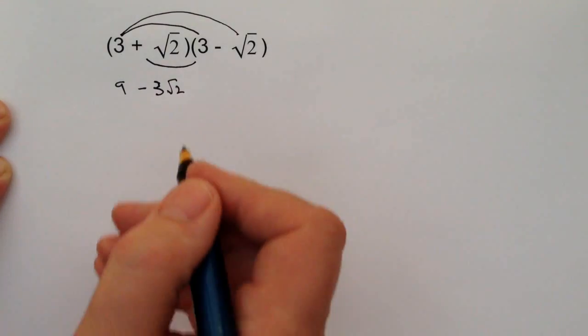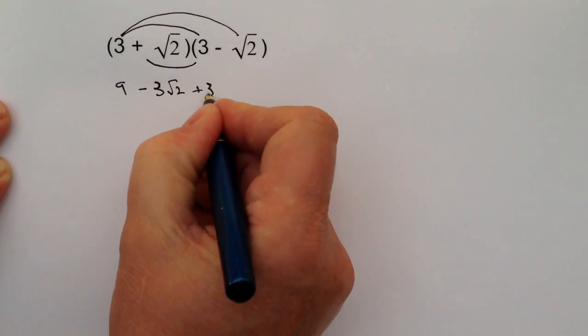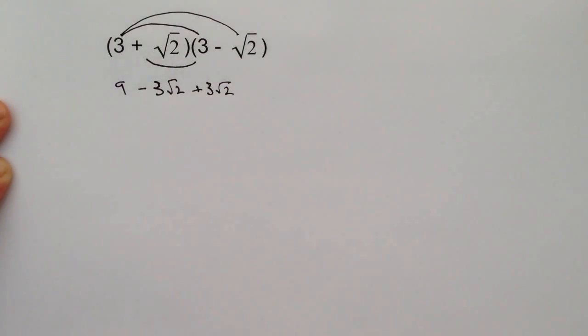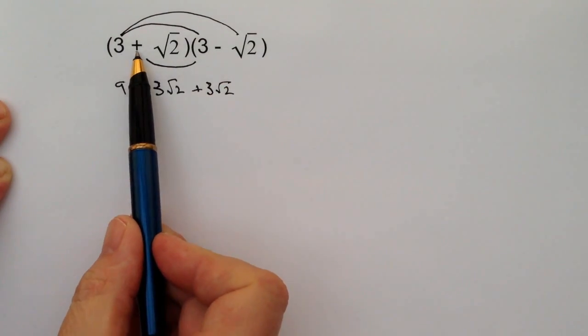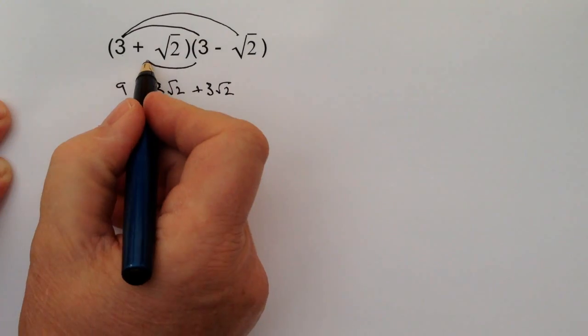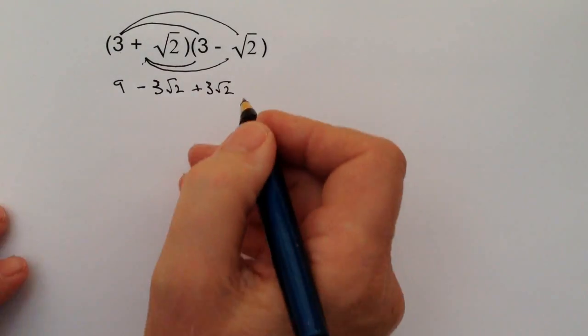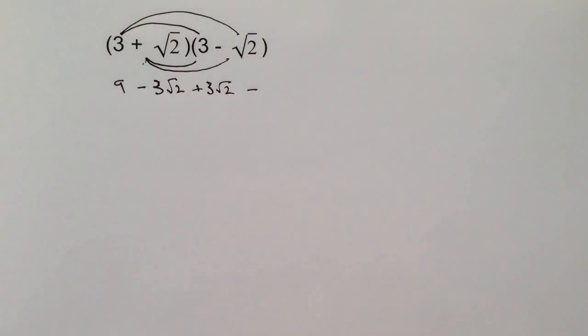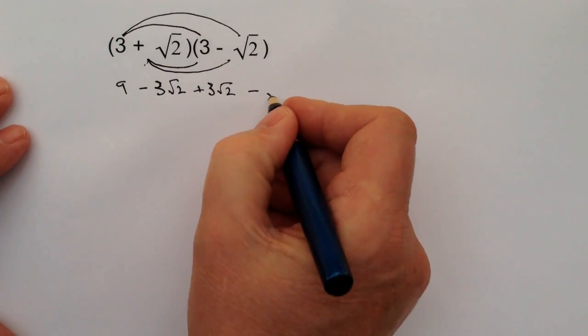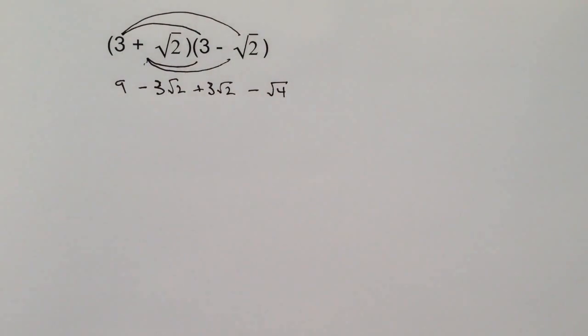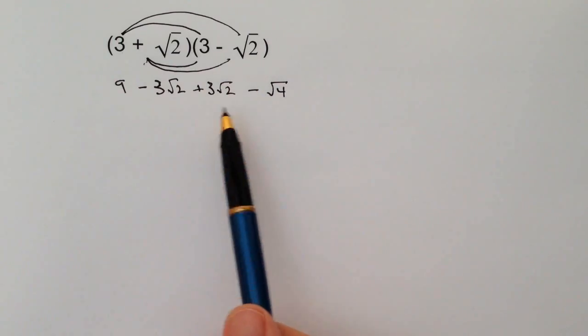Then I've got plus root two times minus root two. A plus times a minus is going to be a minus, and that's going to give me root two times root two, which is root four.